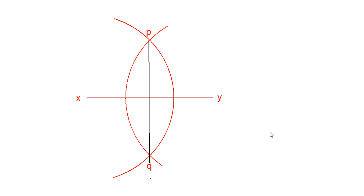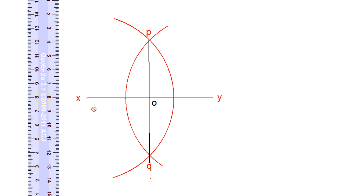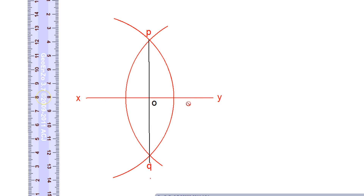So OX is equal to OY, which is equal to half of XY. Also, the line PQ is perpendicular to XY. This is how we can divide a line into two equal parts — very simple, and you can try it.